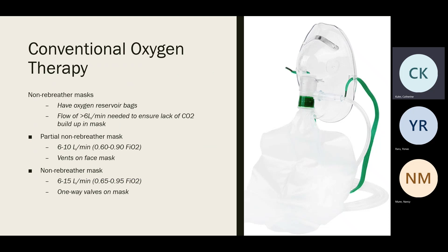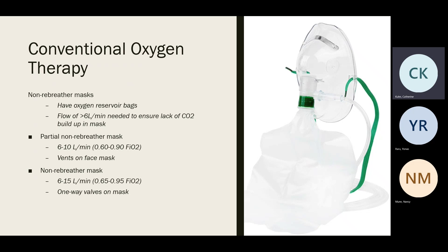We have the partial non-rebreather and the 100% non-rebreather masks. Both look similar — the 100% non-rebreather has a one-way valve that allows air to escape but not enter. The partial non-rebreather has vents. Both have an oxygen reservoir bag that should be insufflated. The flow of oxygen needs to be at least six liters per minute to prevent CO2 buildup. The partial non-rebreather goes up to 10 liters; the 100% non-rebreather up to 15.